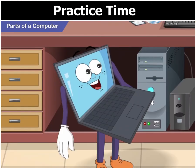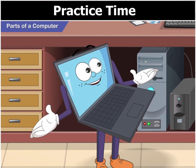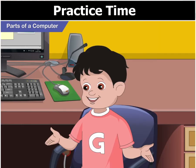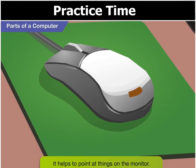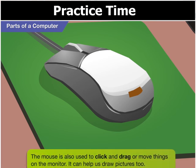Let us understand the mouse now. A mouse is a pointing device, usually joined by a cable to a computer. It helps us point at things on the monitor. The mouse is also used to click and drag or move things on the monitor. It can help us draw pictures too.